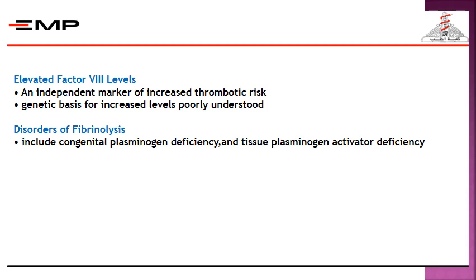Research has found that venous thrombosis can occur in persons with high factor 8 levels — an independent marker of increased thrombotic risk, though the genetic basis for elevated levels is poorly understood. Disorders of fibrinolysis include congenital plasminogen deficiency and tissue plasminogen activator deficiency, which also create a tendency for thrombosis.